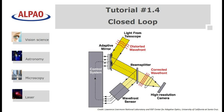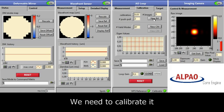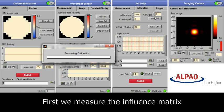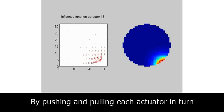In the final part, we combine the first three elements to work in a closed loop. Before using the loop, we need to calibrate our deformable mirror. This is performed by measuring the influence matrix of the mirror.